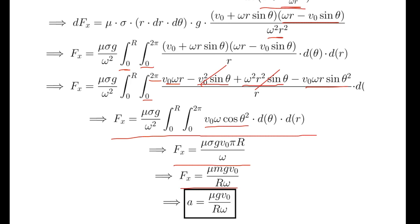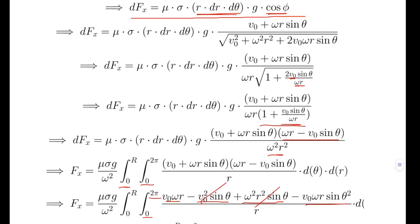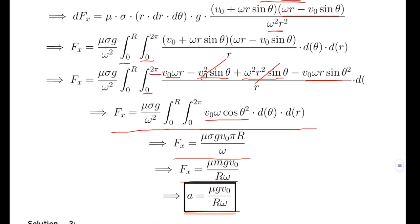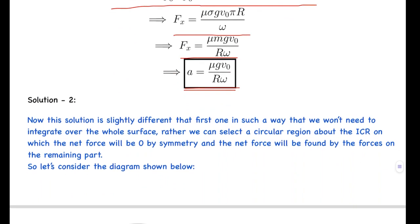The acceleration is this force divided by mass, giving a = mu g v-naught / (R omega). The book's answer is twice this value — 2 mu g v-naught / (R omega) — which is incorrect; the book most likely missed the factor of one-half in the binomial approximation. This is the correct answer, and that's the end of Solution 1. Now let's look at Solution 2.